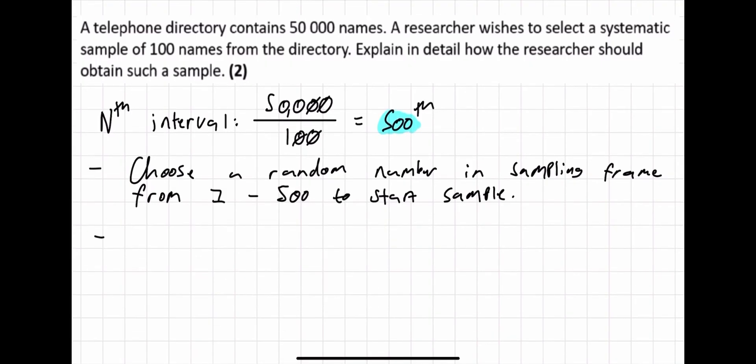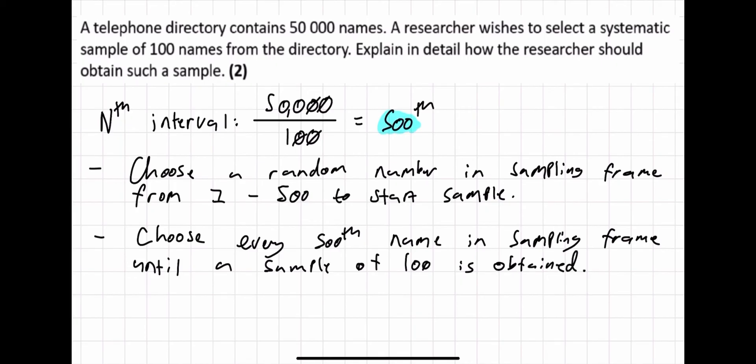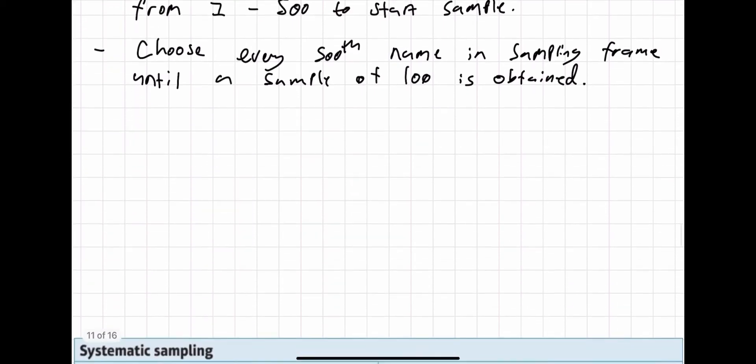You basically then choose every 500th person in the sampling frame until you have obtained a sample of 100. So choose every 500th name in sampling frame, or telephone directory in this case would be your sampling frame, until a sample of 100 is obtained. This is quite a nice one, there was not that much writing.